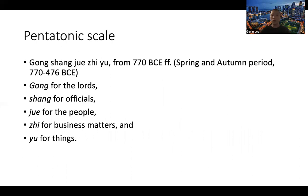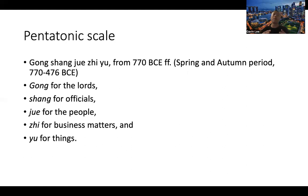Now I'll talk about the music theory of the pentatonic scale. The five notes of the pentatonic scale are known as gong, shang, jue, zhi, and yu, and this nomenclature comes from 770 BCE onwards during the spring and autumn period. The pentatonic scale had social symbolism: in a hierarchy, gong represents lords, shang represents officials, jue represented the people, zhi represented business matters, and yu represented things.